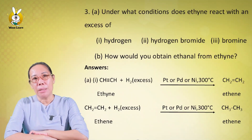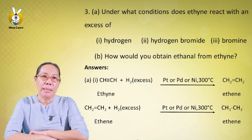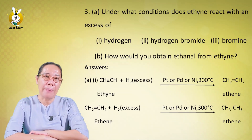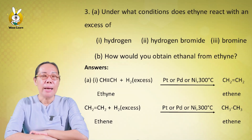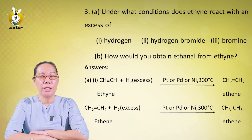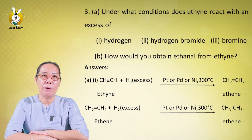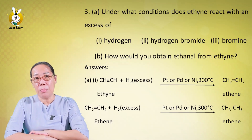Under what conditions does it react with an excess of hydrogen bromide? The reaction has to be done with excess hydrogen bromide. Bromine water is reddish-brown and turns colorless, and when vitamin C is added it turns black. It is reddish-brown colorless, but it does not decolorize the orange dye. Number three question is conversion.